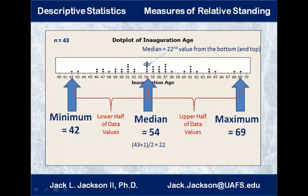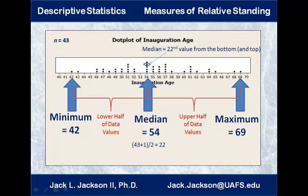So we have the 22nd one from the top, making it the median. That means half of the data is below it and half is above it — 21 values below and 21 above. The lower half of the data is between the minimum and the median, and between the median and the maximum is the other half. Notice the median in this case is a little bit closer to the lower end than to the upper end.